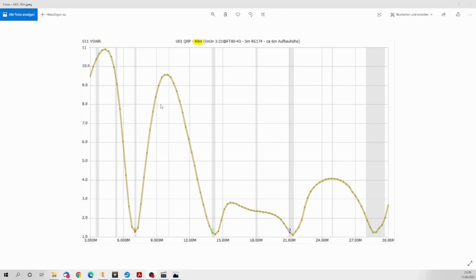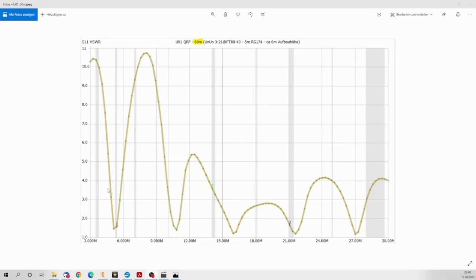So this is the NanoVNA plot of just the 40 meter portion and as you can see we have a low SWR dip on 40 meters we have a second one on 20 meters we have a third one on 15 meters and we have a fourth one on 10 meter band.